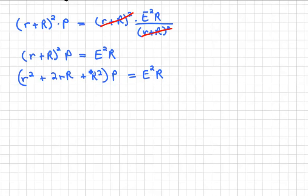On the left side, I'm going to distribute. So we're going to end up with P r squared, lowercase r squared, plus two P lowercase r capital R, plus P capital R squared, equals E squared R.